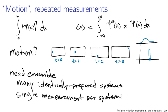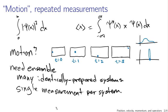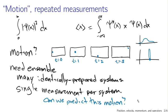This notion of averaging over many identically prepared systems is important in quantum mechanics because of the effect that measurement has on the system. In the context of motion, can we predict where the particle is likely to be as a function of time? Yes, we can. What I'd like to do is consider a quantum mechanical calculation that we can actually do: the time derivative of the expected value of position. This time derivative tells us how the center of the probability distribution — the center of the wave function — moves with time.